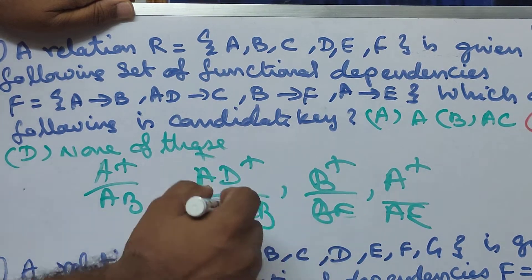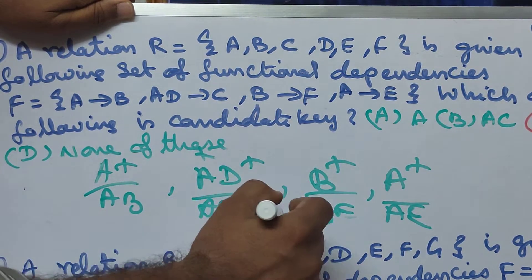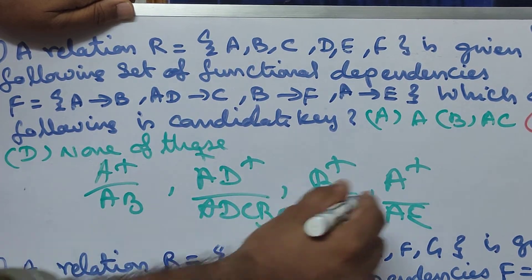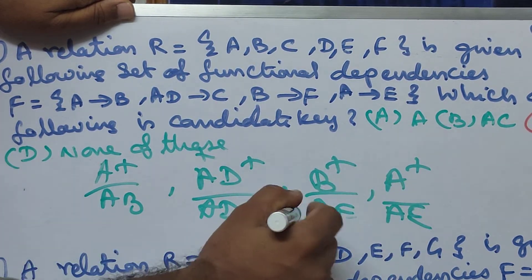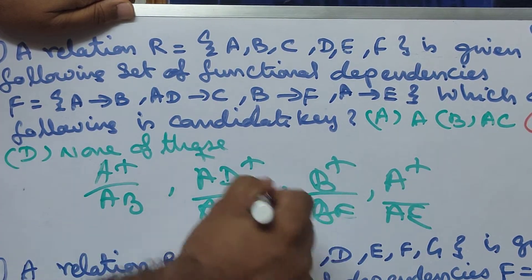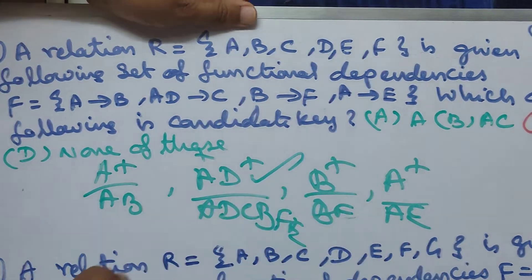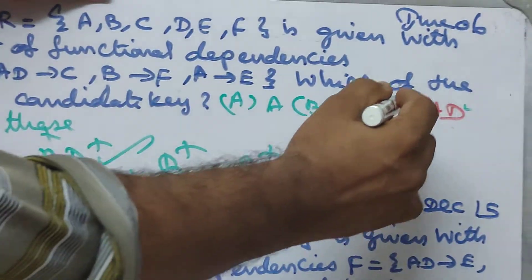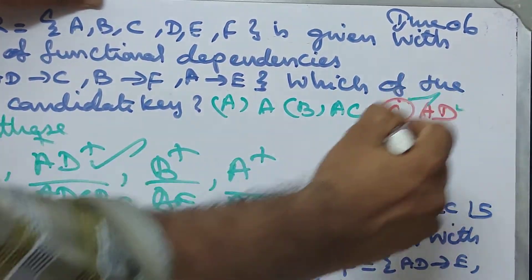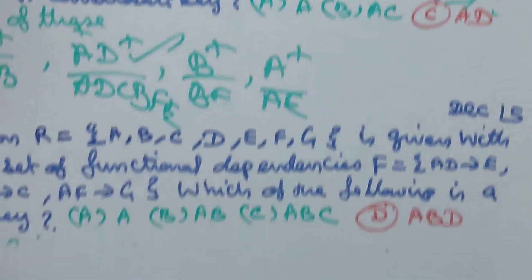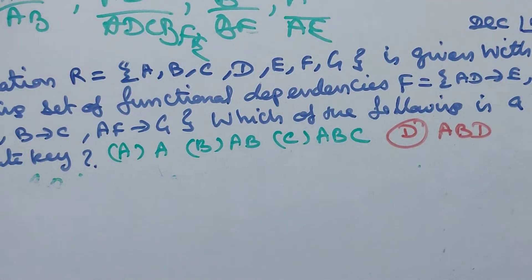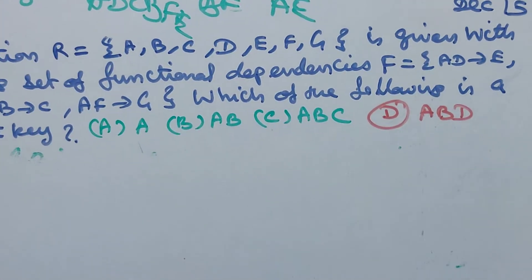Closure of A, D gives A, D, C, B. AD is the candidate key — that is the correct answer.